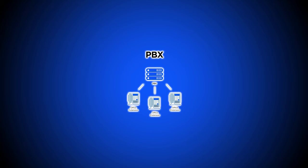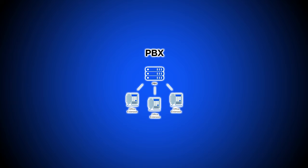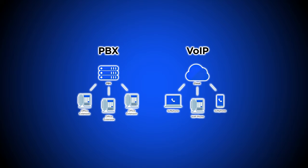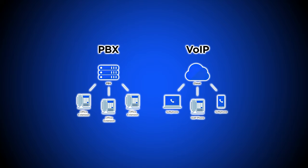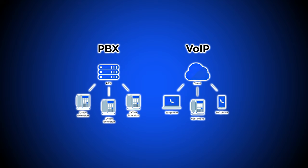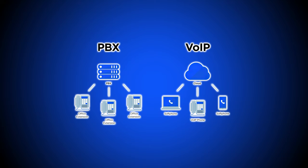Phone extensions work differently on PBX and VoIP phone systems, but both automatically forward callers to the correct extension. In PBX systems, admins assign extensions to phone lines and set up calling rules, and the PBX system automatically sends the call to the dialed extension. In VoIP phone systems, admins purchase and assign extensions to VoIP phone numbers, then set up call routing paths that are automatically initiated when the extension is dialed.